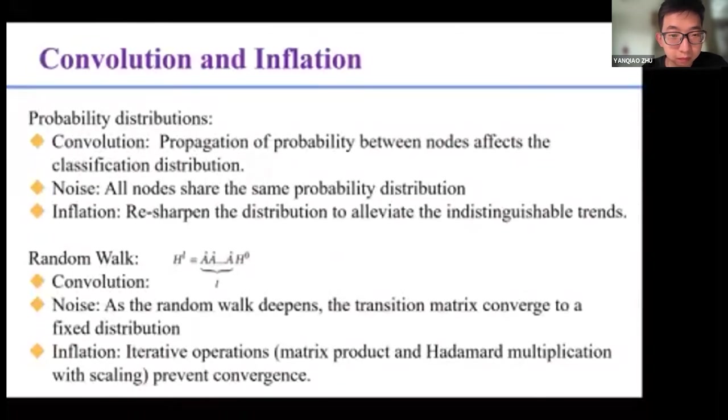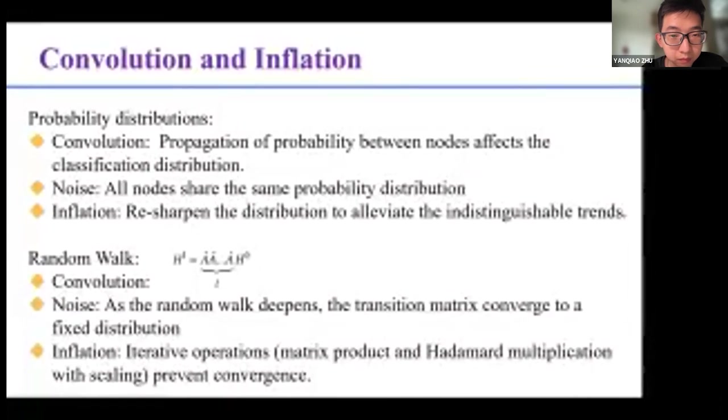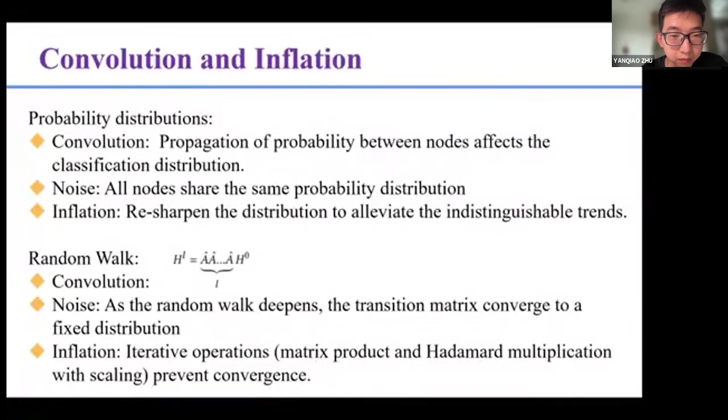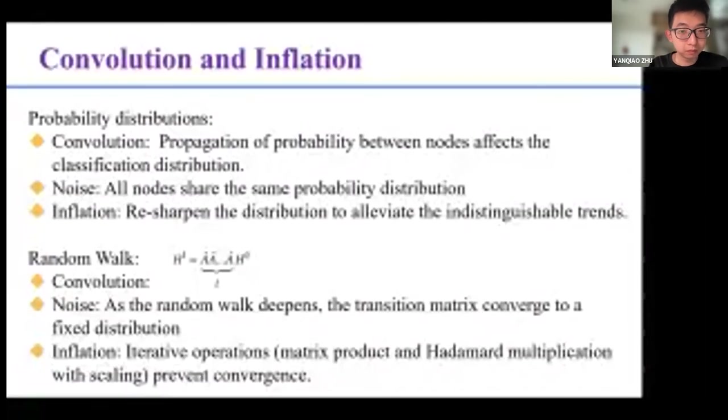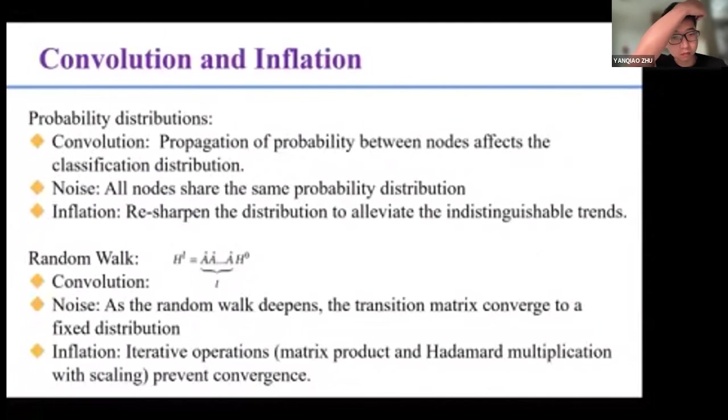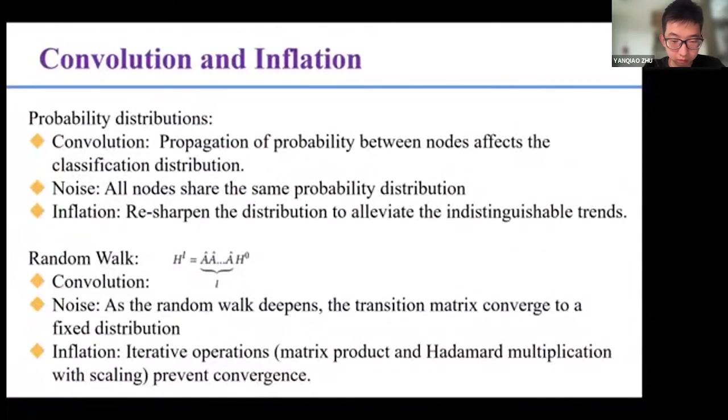For probability distribution, we treat the node features as the probability distribution vectors to be classified. The probability is propagated between nodes and can affect the classification distribution of neighbors. Oversmoothing means that all nodes share the same probability distribution. Inflation can resharpen the distribution and preserve the intra-class data distribution.